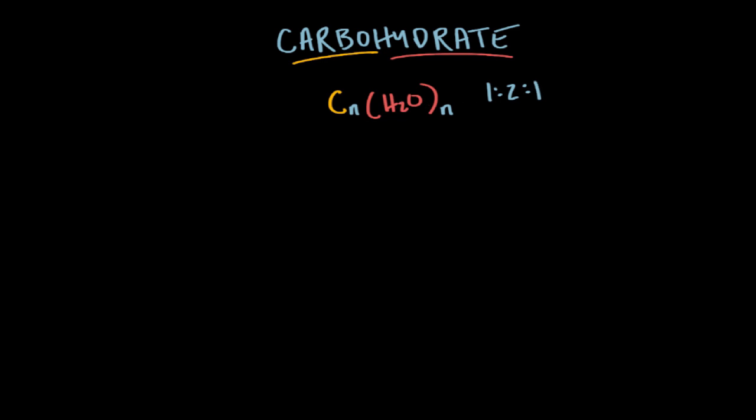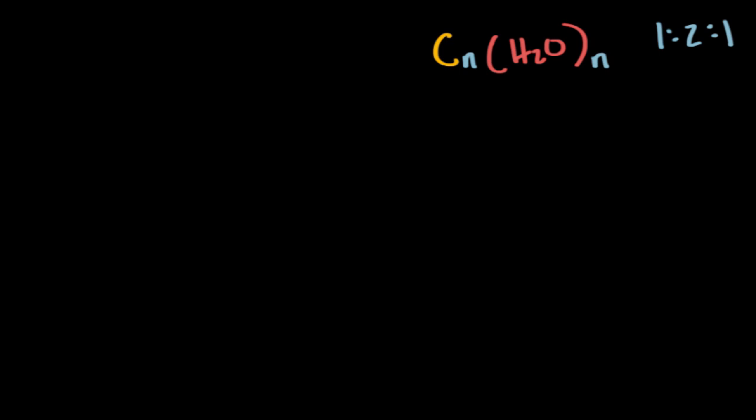Now when we have one of these carbohydrate molecules, we call it a monosaccharide. Monosaccharide essentially means one saccharide, and saccharide is just a synonym for carbohydrate. Saccharide is derived from the Greek word for sugar. So you might hear a single carbohydrate referred to as a simple sugar. But in all these instances, we're talking about the same kind of molecule.